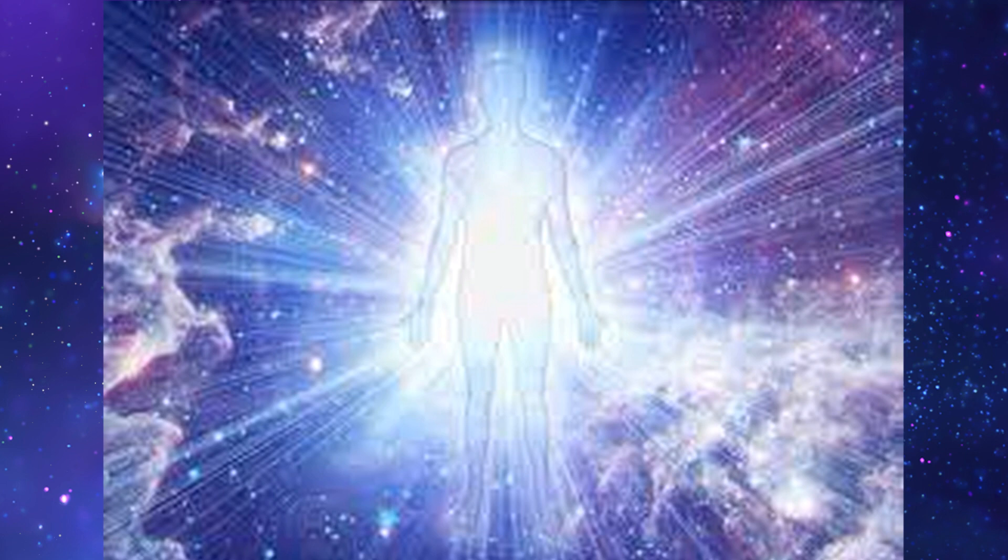For example, you may see auras. You can see colors around people and animals. This color says something about how they are doing, and you can also see where there are energetic blockages.